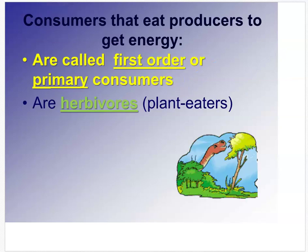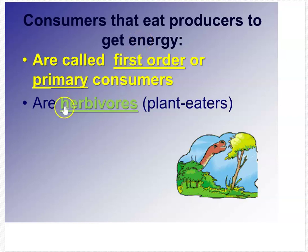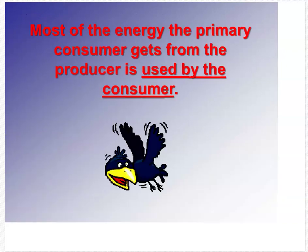Consumers that eat producers are called first order or primary consumers. Then there are second order and third order consumers — it goes all the way up the food chain. If we only eat plants, we're called herbivores. If we eat both plants and meat, we're called omnivores. If we eat only meat, we're called carnivores.